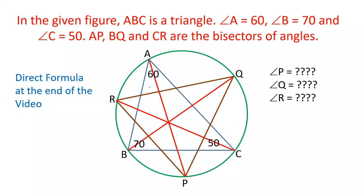Hello friends! Welcome to our YouTube channel SSC Collector. In this video we are going to learn what will be the value of angles formed by a triangle PQR, where triangle ABC is given and the bisectors of angles A, B, and C are AP, BQ, and CR respectively. We will solve the question and at the end of the video I will explain the shortcut direct formula for these angles.